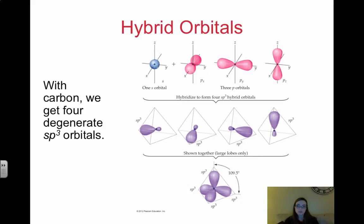With carbon, we're adding 1s and 3p orbitals. That gives us sp3. And again, they're degenerate. They're equal energy.